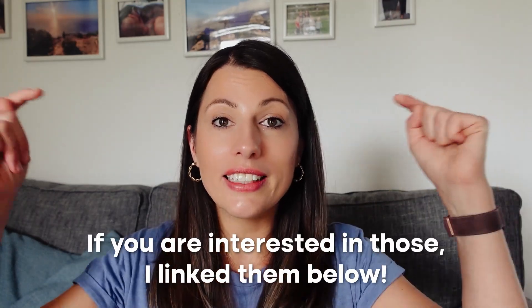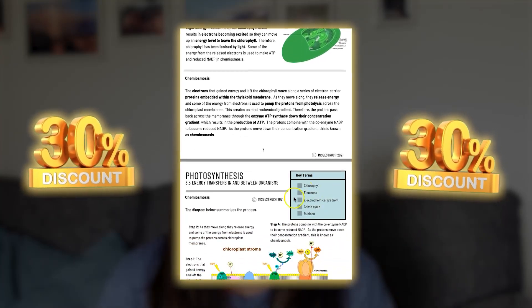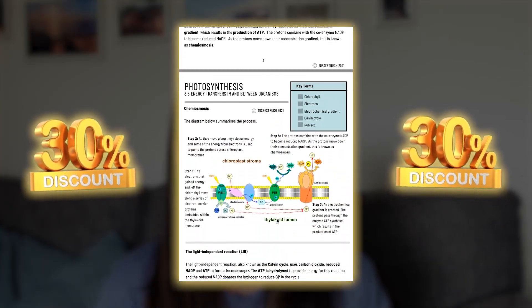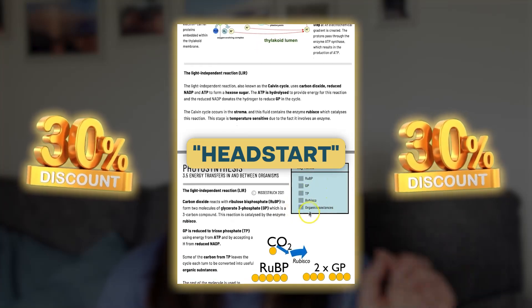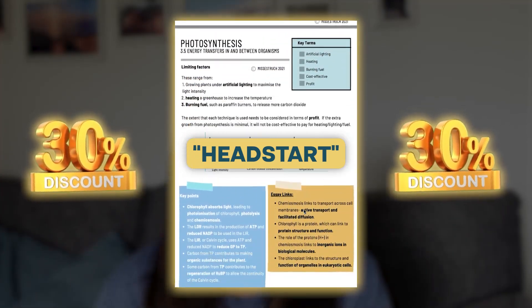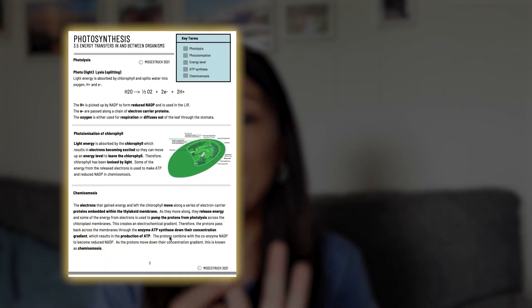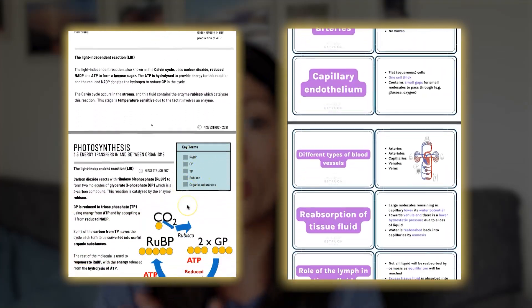If you're interested in those, I'll link them below, and I'm running a 30% discount on those until the 1st of September. Just enter the discount code HEADSTART and you'll get 30% off either my AQA, OCR A, or CIE A-level notes. If you are taking AQA, I'm also doing a 30% discount on my A-level Big 3, which are my three biggest selling resources: A-level notes, revision flashcards, and my Active Recall question workbook — all linked below.